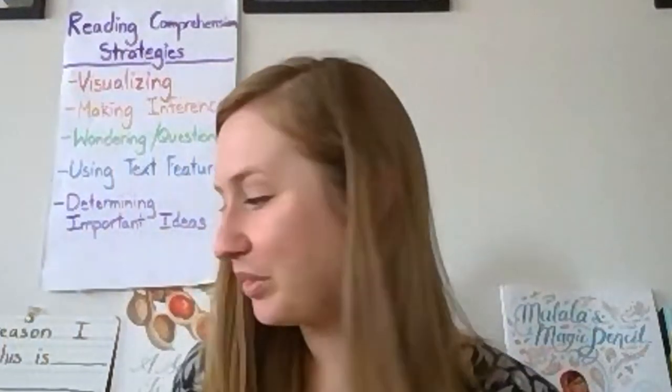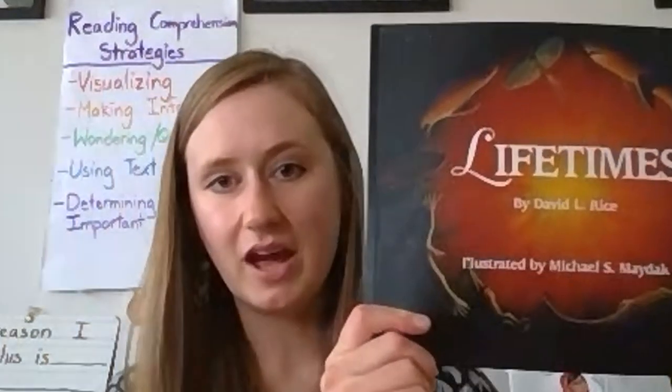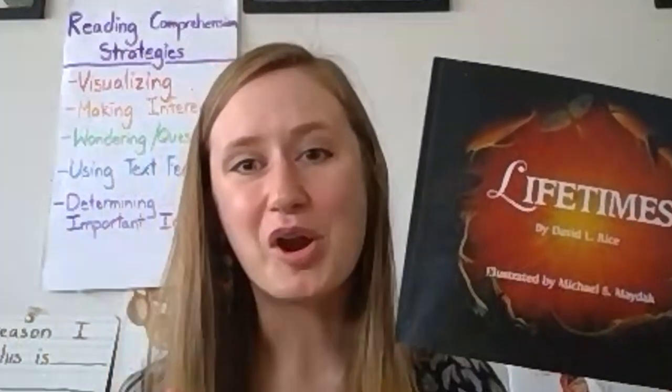Today we practiced determining important ideas by reading about the lifetimes of army ants and elephants and thinking about what is the most important thing to understand and remember about these animals. Next time, we'll read another passage from the book and continue to write, talk, and think about important ideas.